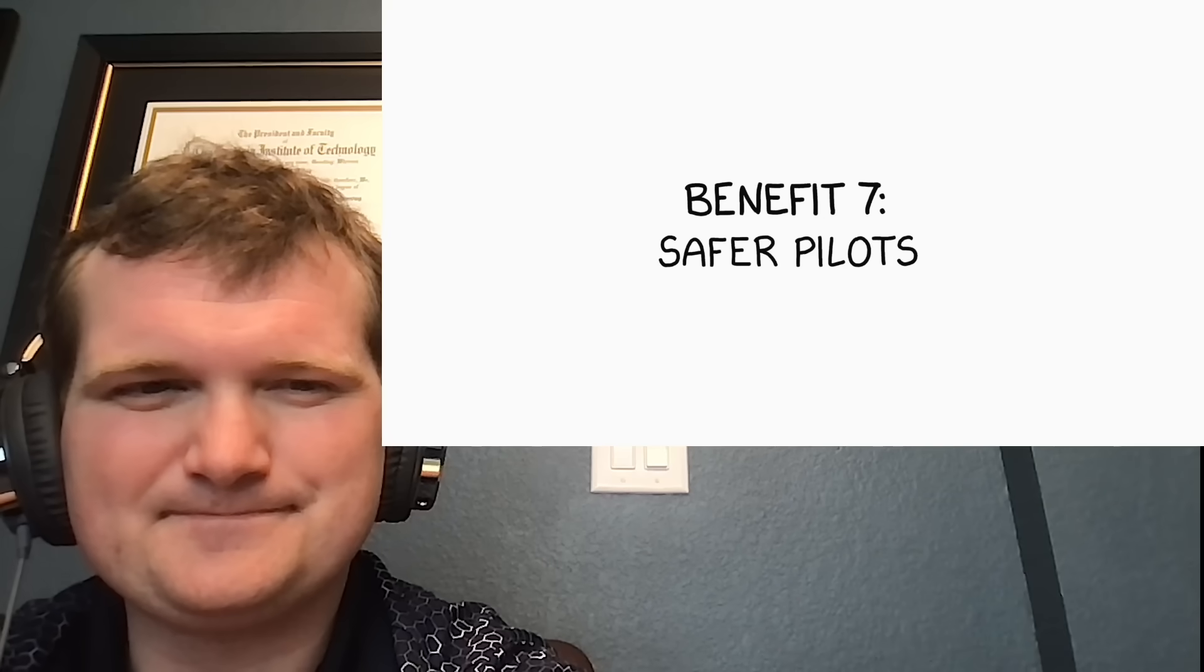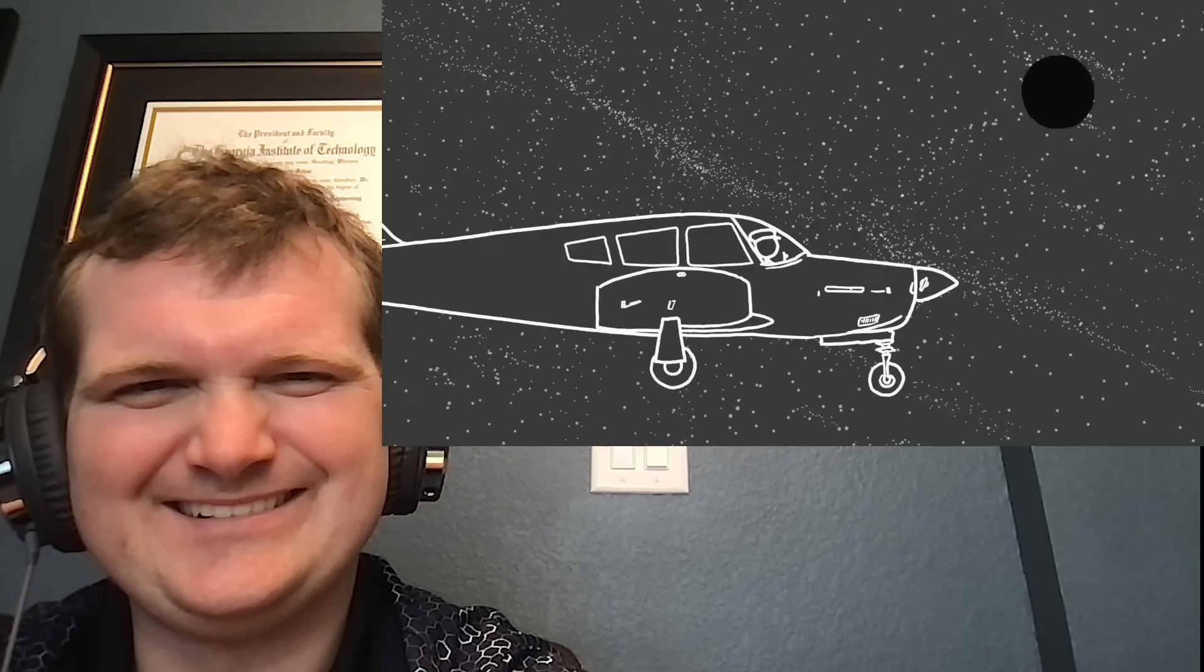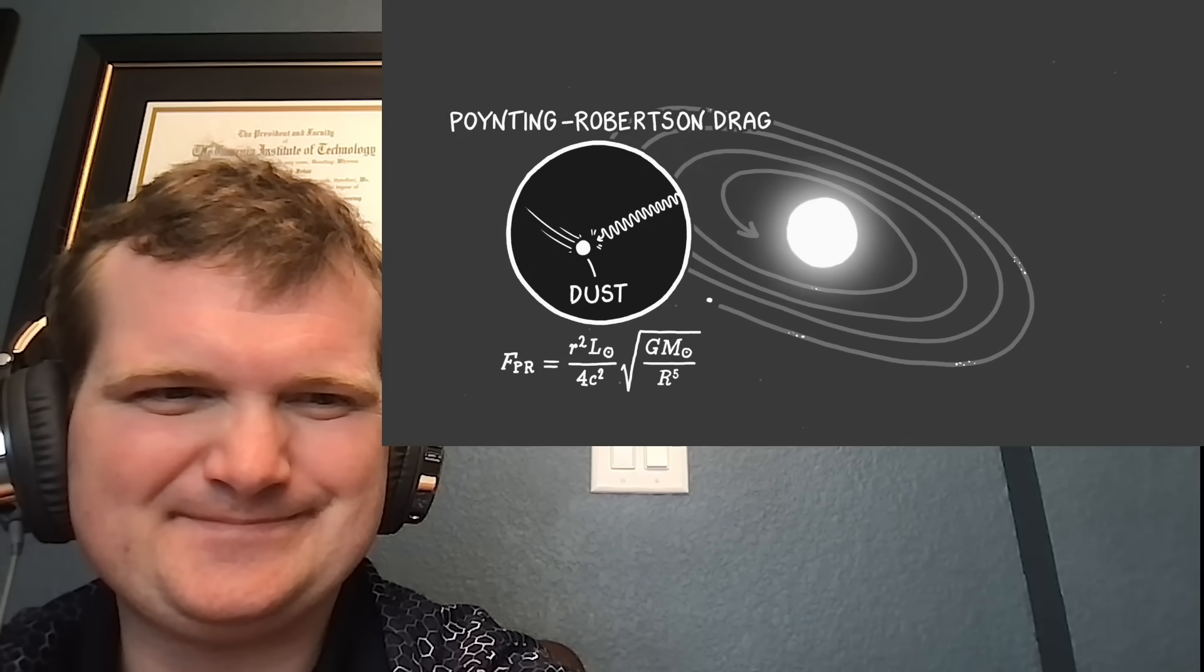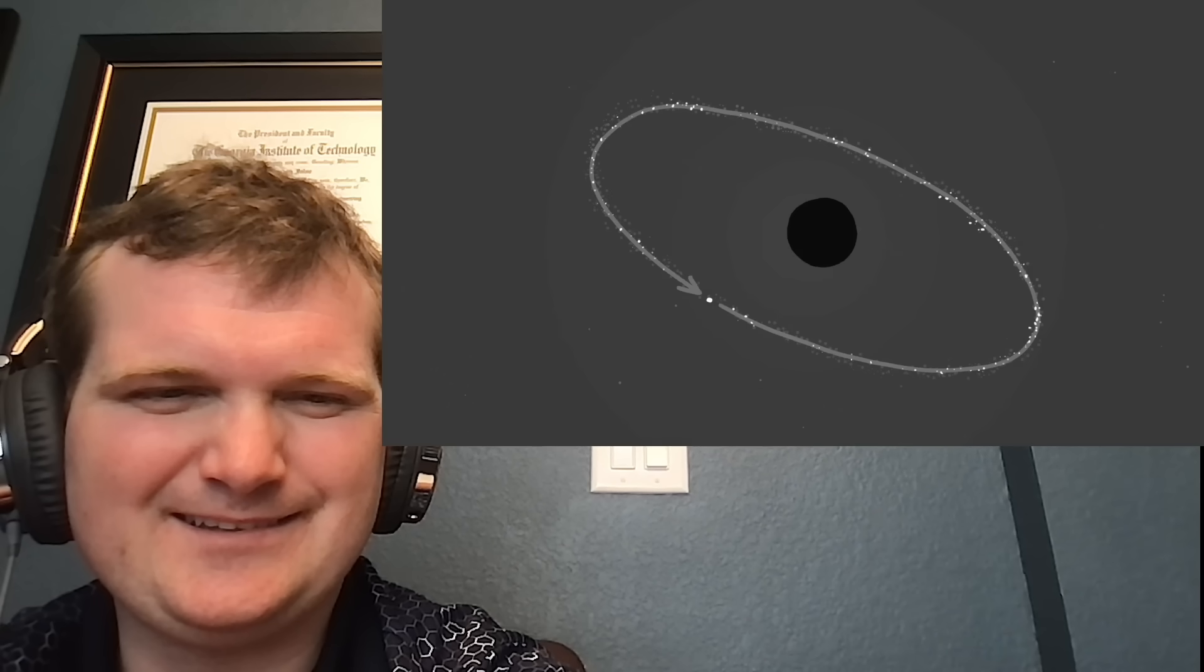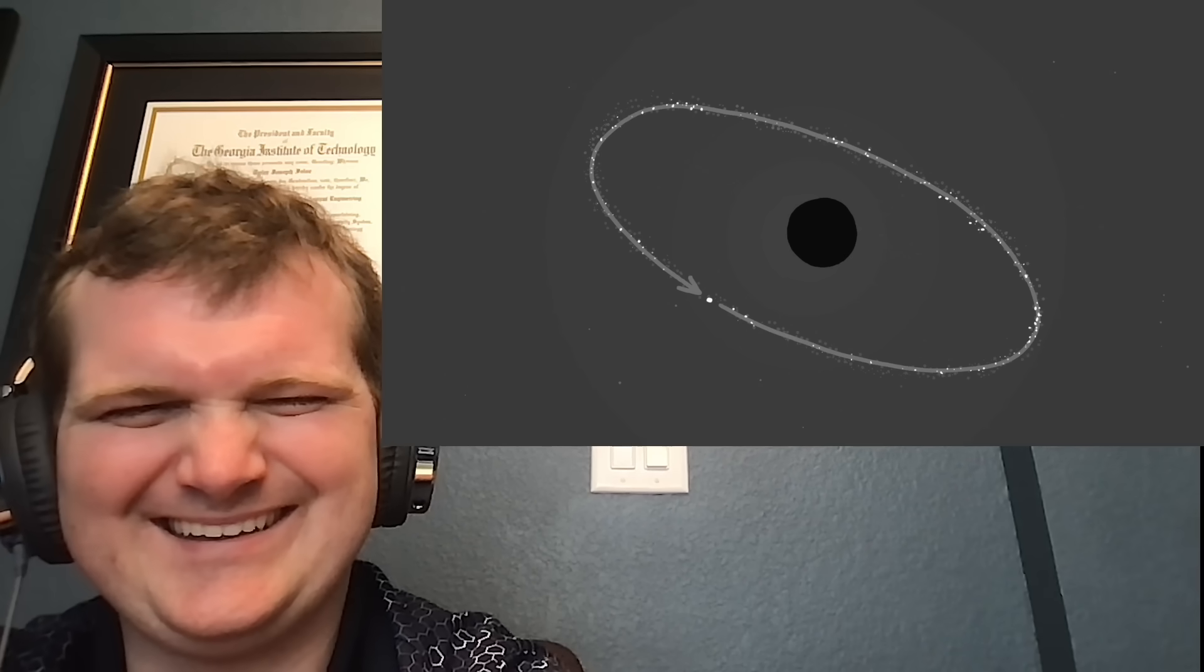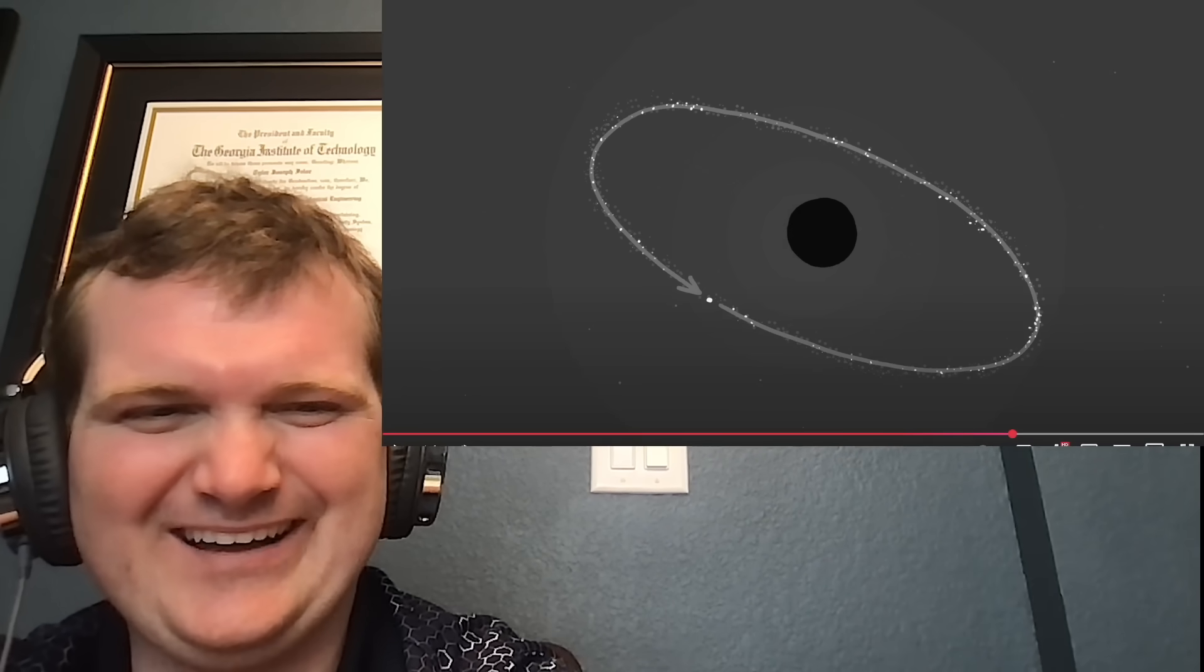Safer pilots: many people sneeze when exposed to bright sunlight. The reasons for this reflex are unknown, but in some situations it's speculated that it may pose a danger to pilots during flight. If the sun went dark we could mitigate this potential aviation hazard. Stable dust orbits: without sunlight there would be no Poynting-Robertson drag, which means we'd finally be able to place dust into a stable orbit around the sun without the orbits decaying. I'm not sure whether anyone wants to do that, but you never know.